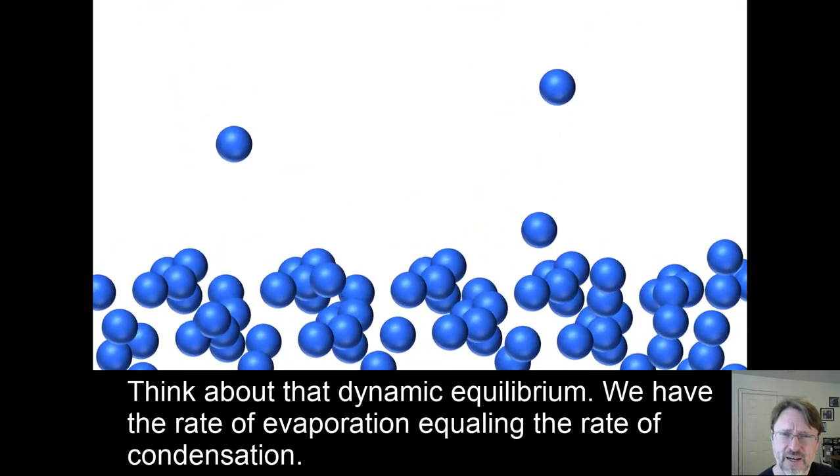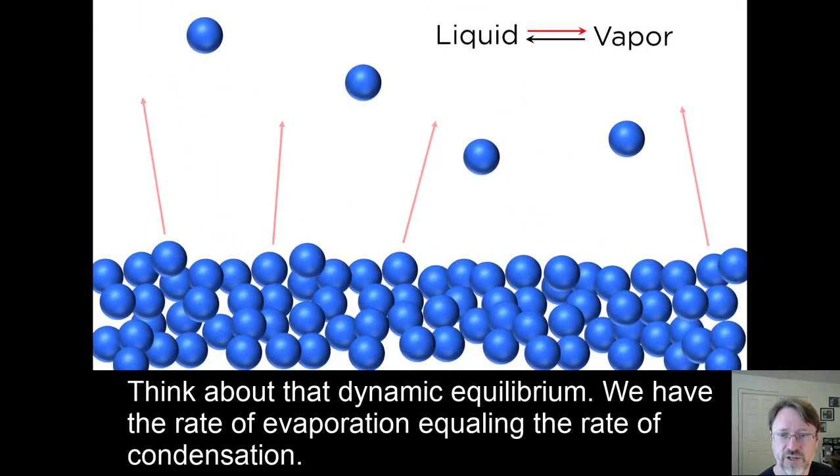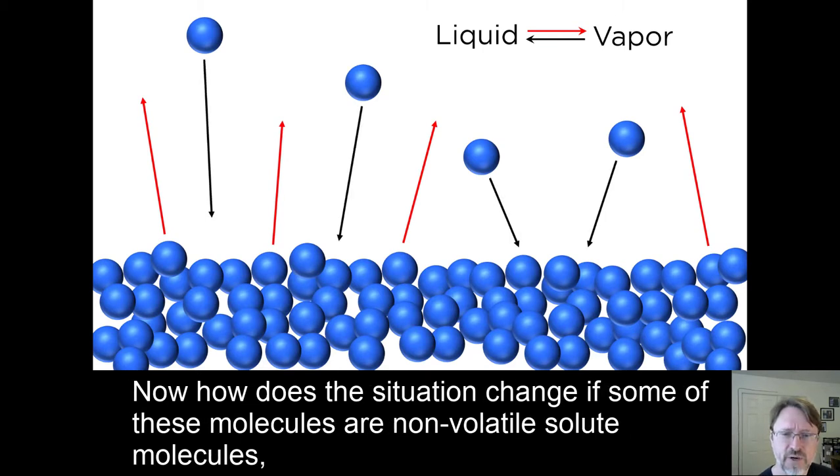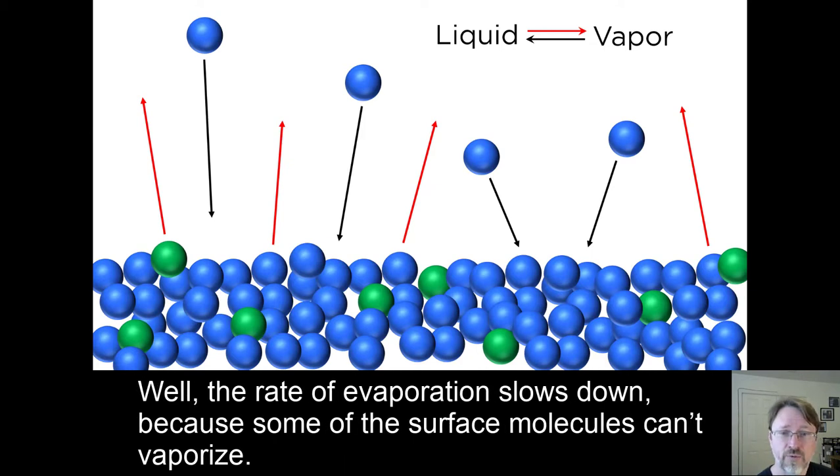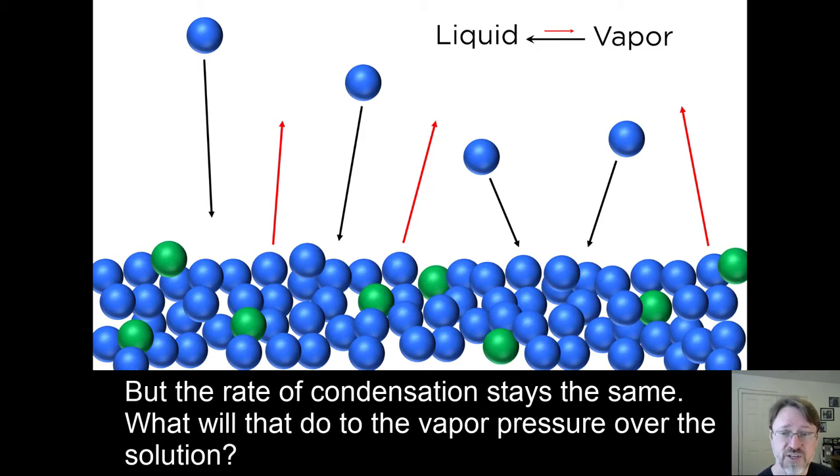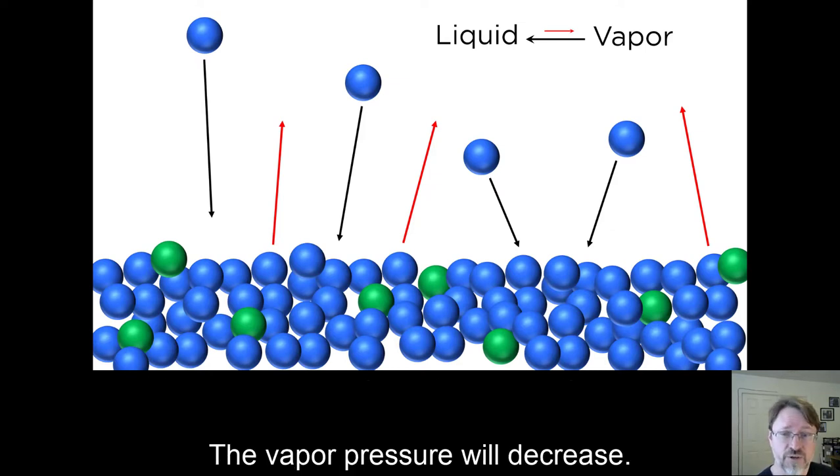Think about that dynamic equilibrium. We have the rate of evaporation equaling the rate of condensation. Now, how does the situation change if some of these molecules are non-volatile solute molecules, where non-volatile means that they do not themselves vaporize? Well, the rate of evaporation slows down because some of the surface molecules can't vaporize, but the rate of condensation stays the same. What will that do to the vapor pressure over the solution? The vapor pressure will decrease.